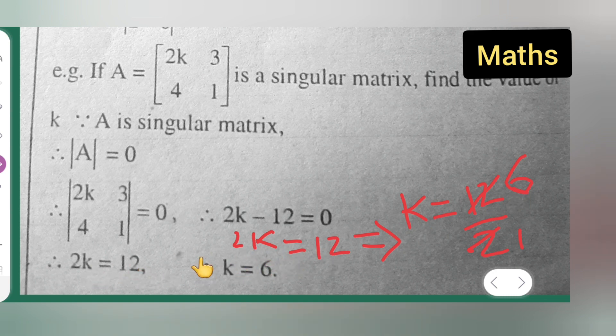2k is equal to 12. This step is from here. Then k is equal to 12 upon 2. 2 will go down, right? And if you cancel, 2 ones are 2, 6 are 12. You will get this.